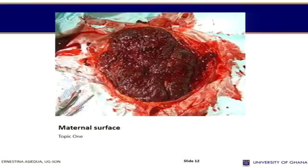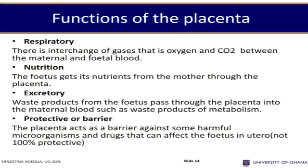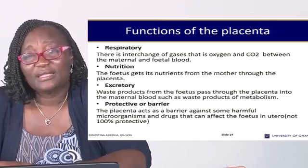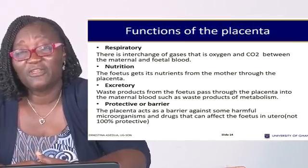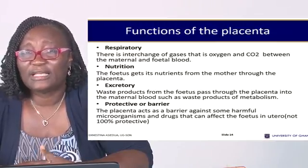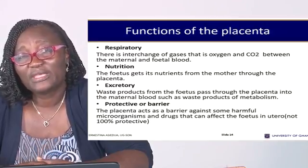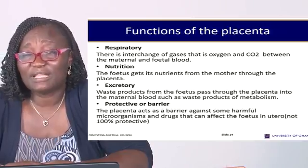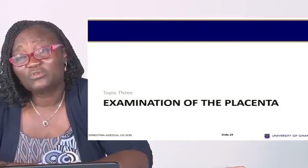Now, what are the functions of the placenta? The placenta has many functions. Respiratory functions: there is exchange of gases through the umbilical cord. Nutrients are also taken from the mother to the fetus through the cord, and if the fetus wants to excrete any waste, it does so through the placenta. The placenta is also a protective barrier against harmful microorganisms — we call it the placental barrier. It prevents organisms with very large molecules from entering. However, if the molecules are very small, they can pass through and become teratogens or destroy the fetus. A lot of infections cannot pass through the placental barrier, apart from German measles and some virulent organisms like syphilis.